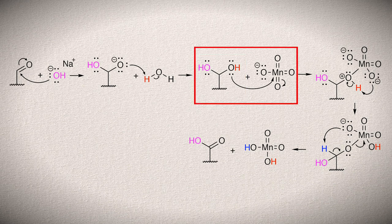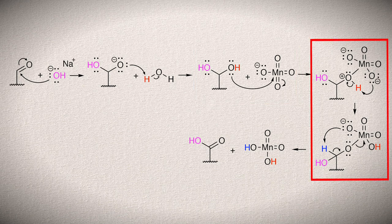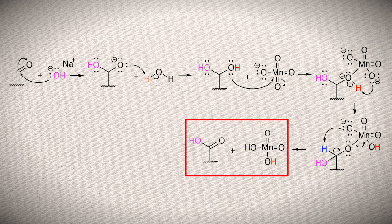One of the oxygen lone pairs in the gemdiol attacks the manganese. Then the reaction proceeds much like the initial reaction with the alcohol in the permanganate ion. This time, there's a hydroxyl group not involved in the reaction, which is colored purple here. We get a carboxylic acid containing the original hydroxide group and more manganic acid.